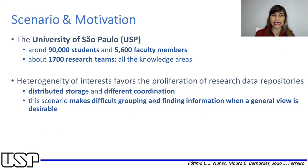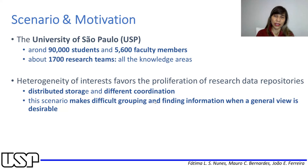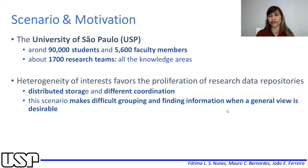Our motivation is that USP is the biggest university in Brazil, with impressive numbers: 90,000 students and almost 6,000 faculty members, besides research teams across all areas. There is a big diversity in the interests of the users, and this scenario makes it difficult to group and define information when a general view is desirable.